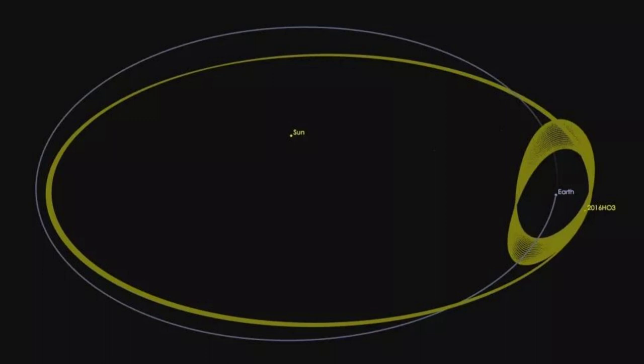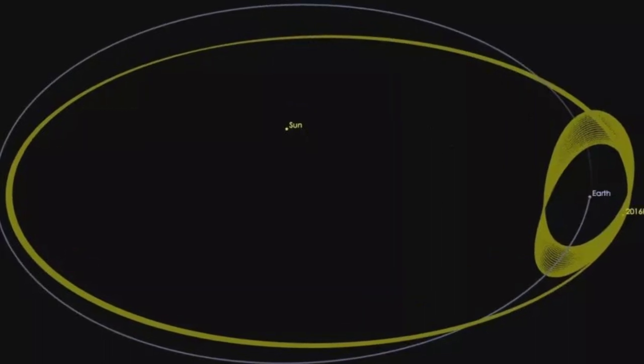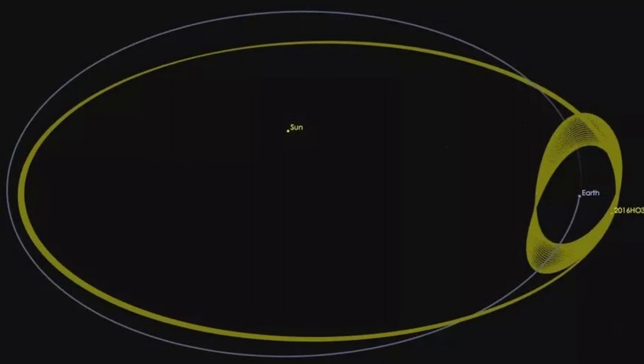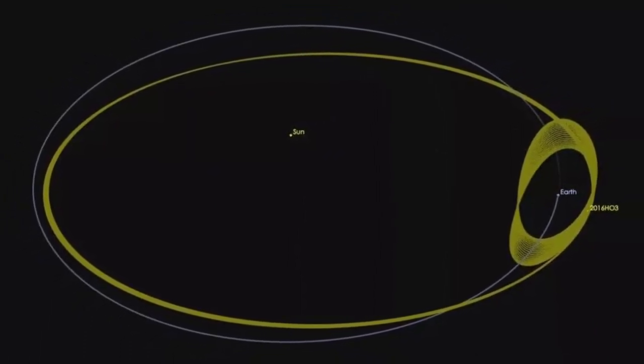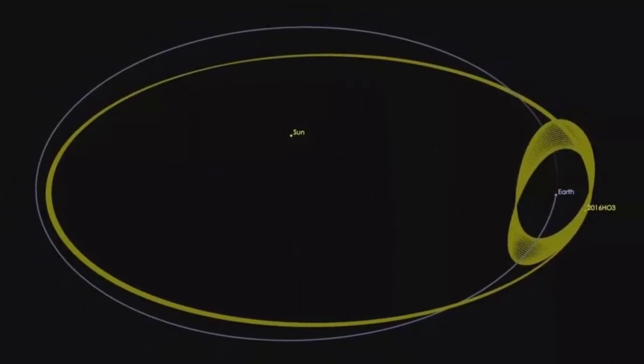Following 2023 FW13's initial discovery in March, space observers dug into the data and found observations of the asteroid dating all the way back to 2012, according to LiveScience's sister site Space.com.